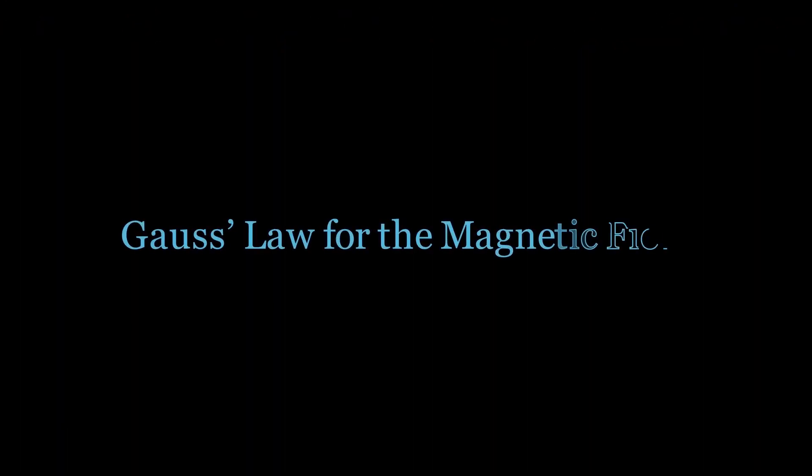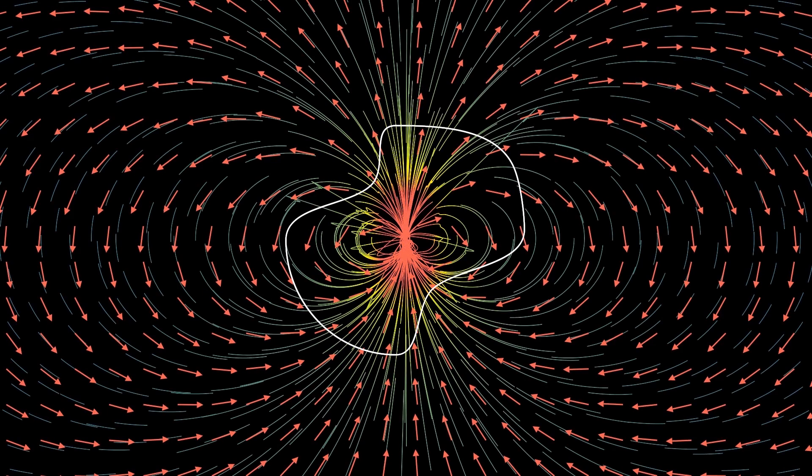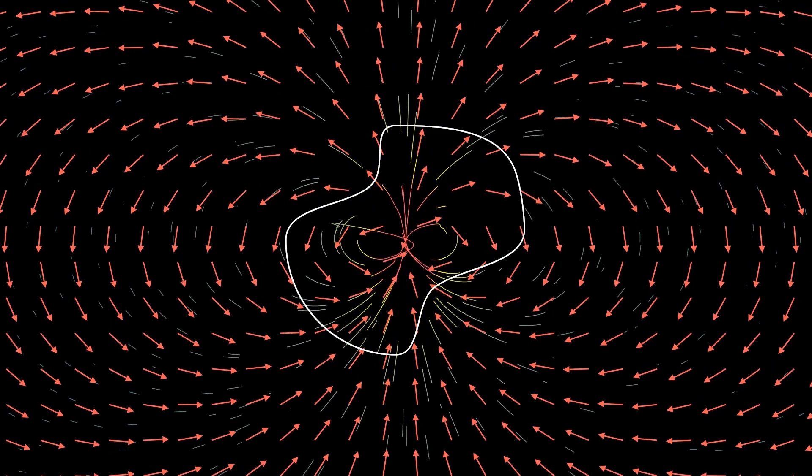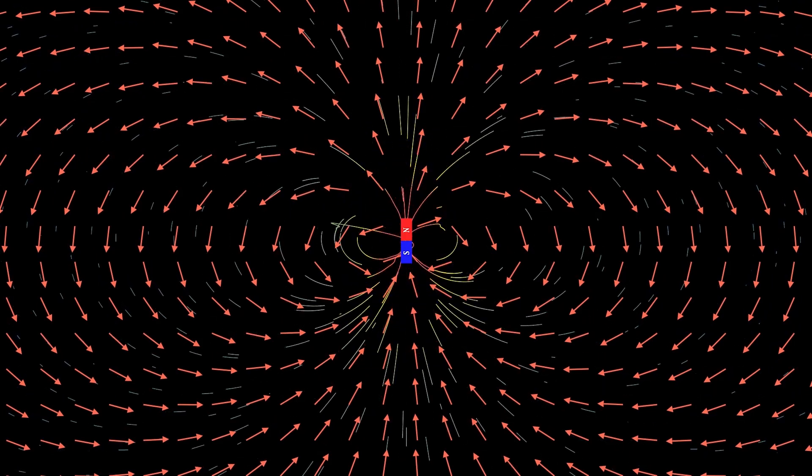Gauss's law for the magnetic field states that the magnetic flux emanating from a closed surface is equal to zero. Magnetic flux enters a certain part of a closed surface and exits through the remainder of the closed surface. That arises directly from the fact that in nature there are no isolated magnetic monopoles. Every magnetic north pole is accompanied by its corresponding south pole, and these two poles can never be separated.